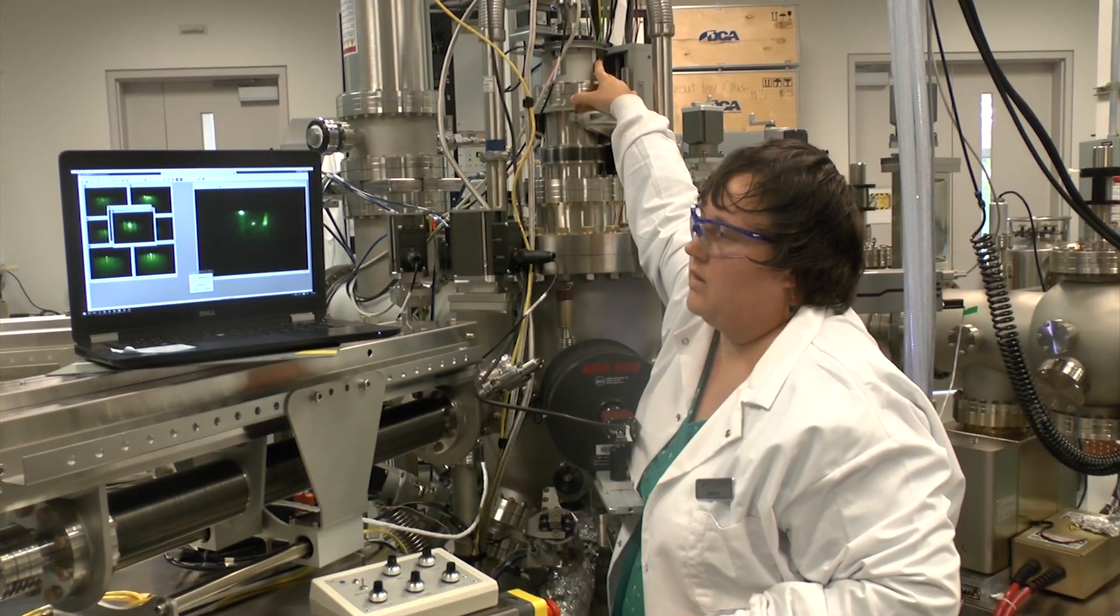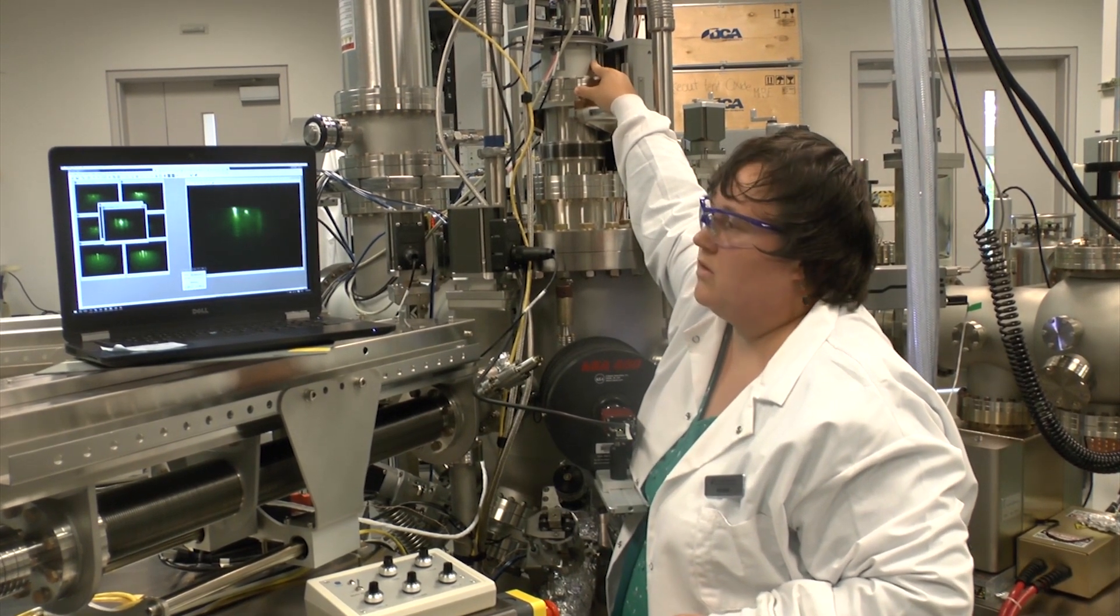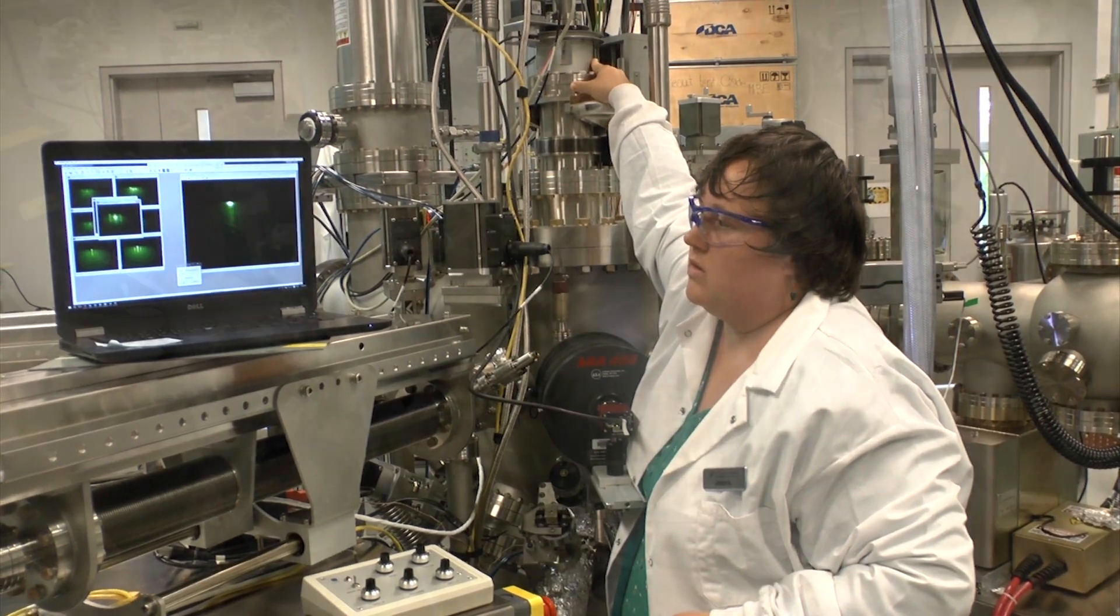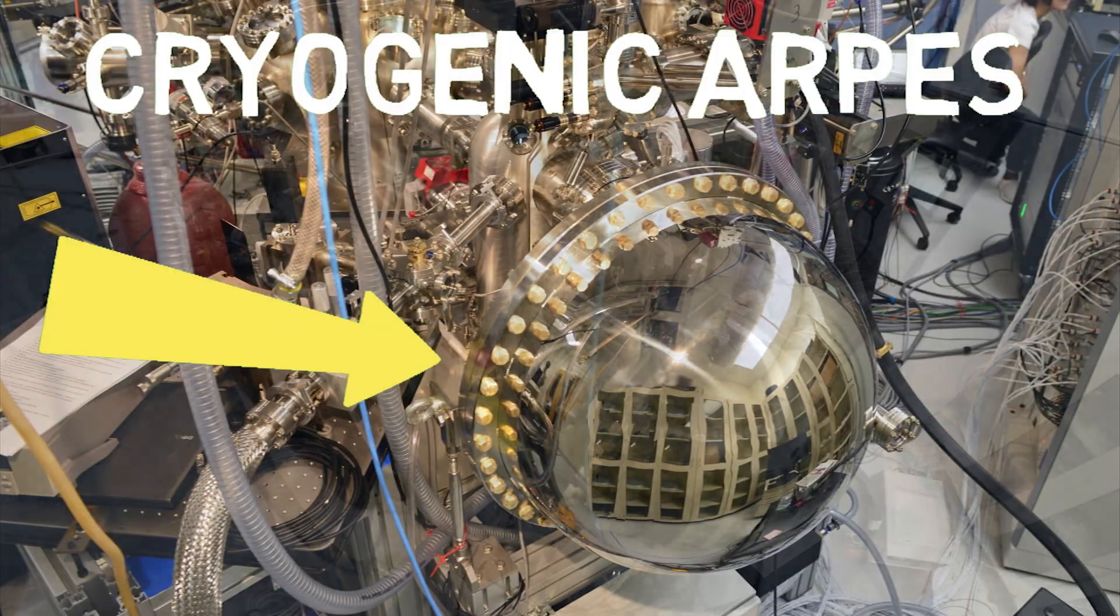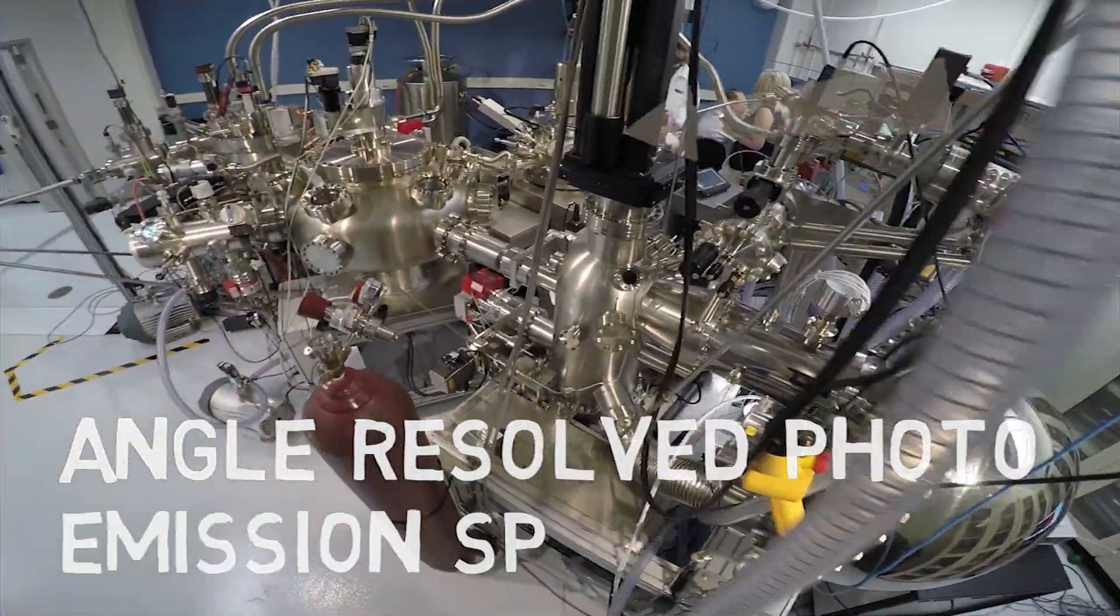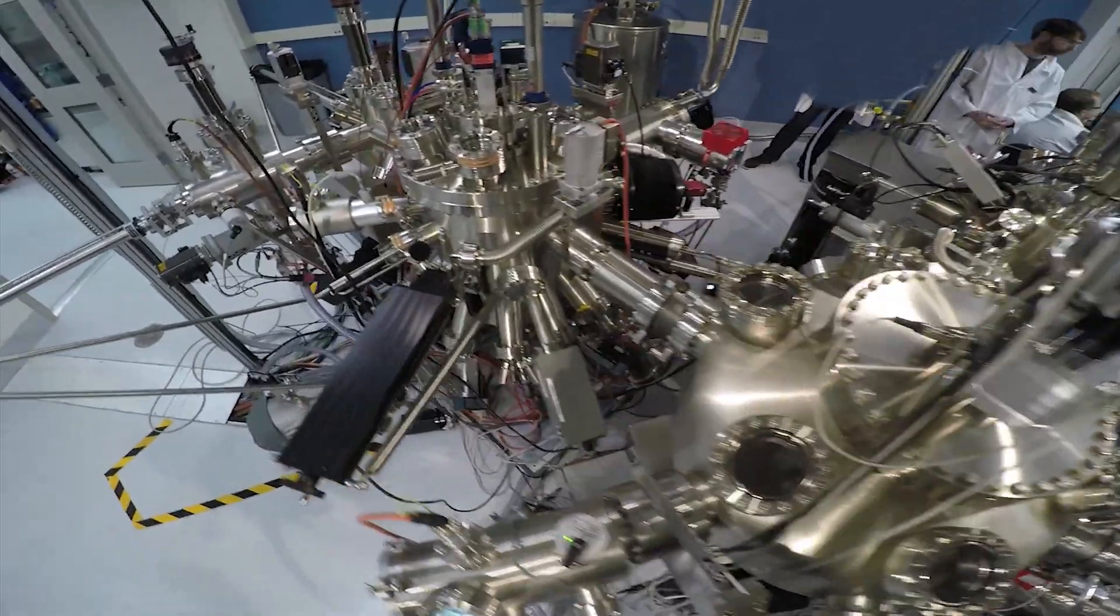During growth, we can observe and characterize the sample using optical and electron diffraction techniques and alter the experiment in real-time, if needed. The ARPES allows us to measure the electrical properties of an ultra-thin film at various stages of its growth. The STM chamber gives us a unique image of the atoms that comprise the layer surface.